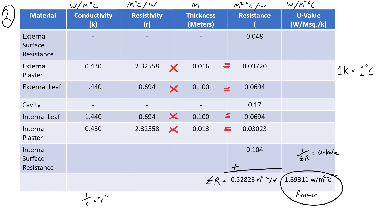Once the resistivity column is filled, multiply resistivity by thickness to get the resistance for each layer. Once all resistances are calculated, find sigma R — the total of all R values — with units of metres squared degrees Celsius per watt. Finally, divide 1 by the total resistance to get the U-value of the wall. That is the complete method.